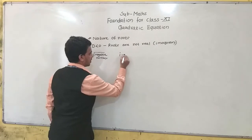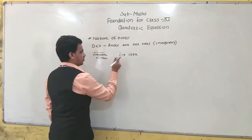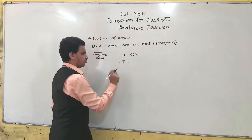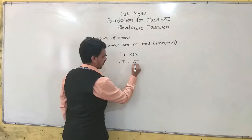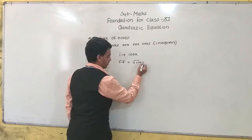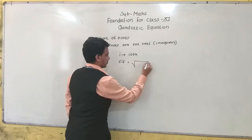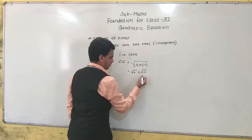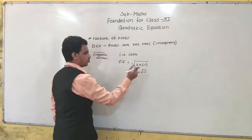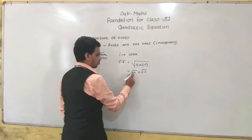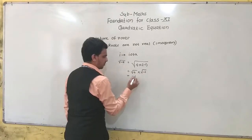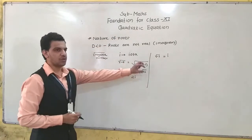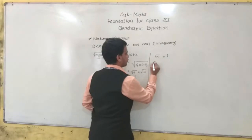We define 'i', which is called iota. For example, root of minus 4: we write minus 4 as 4 into minus 1, so square root of 4 times square root of minus 1, which is 2 times i. The value of root of minus 1 is i, and this is called iota.